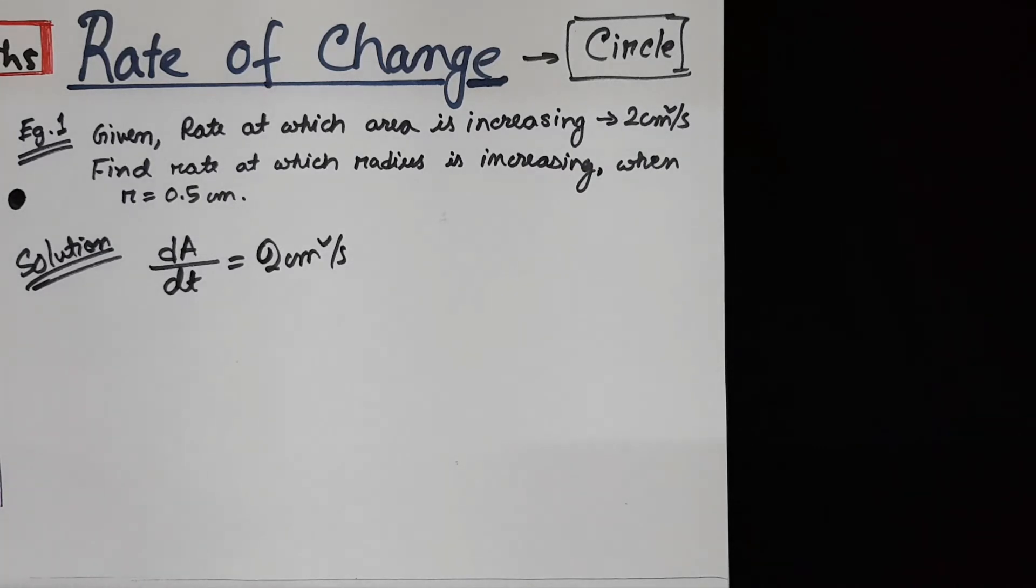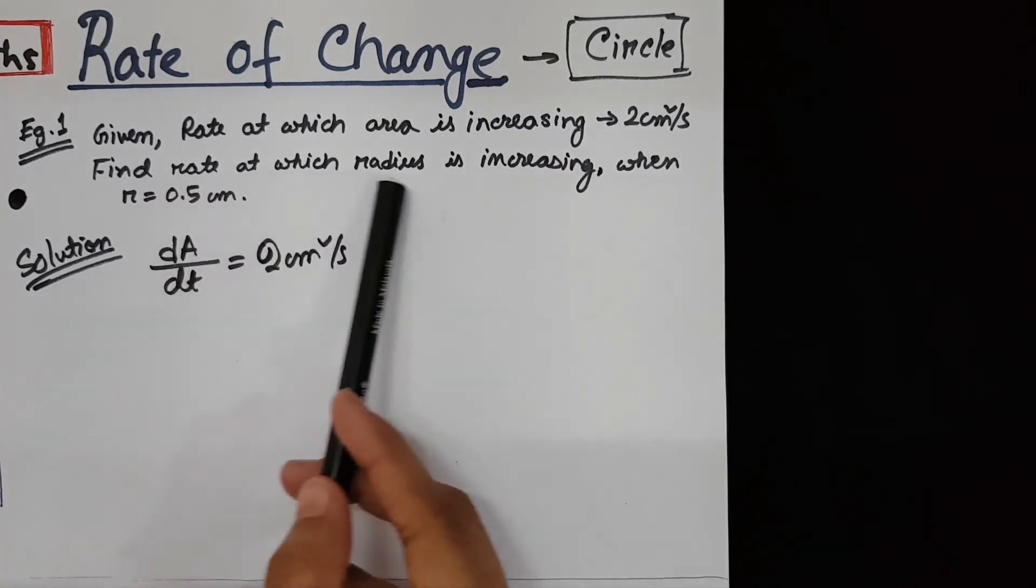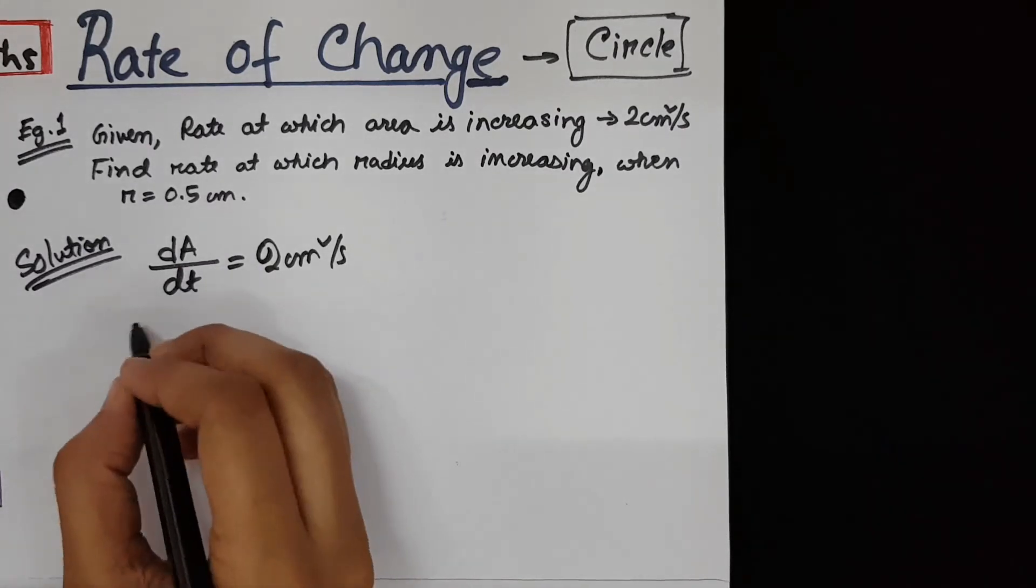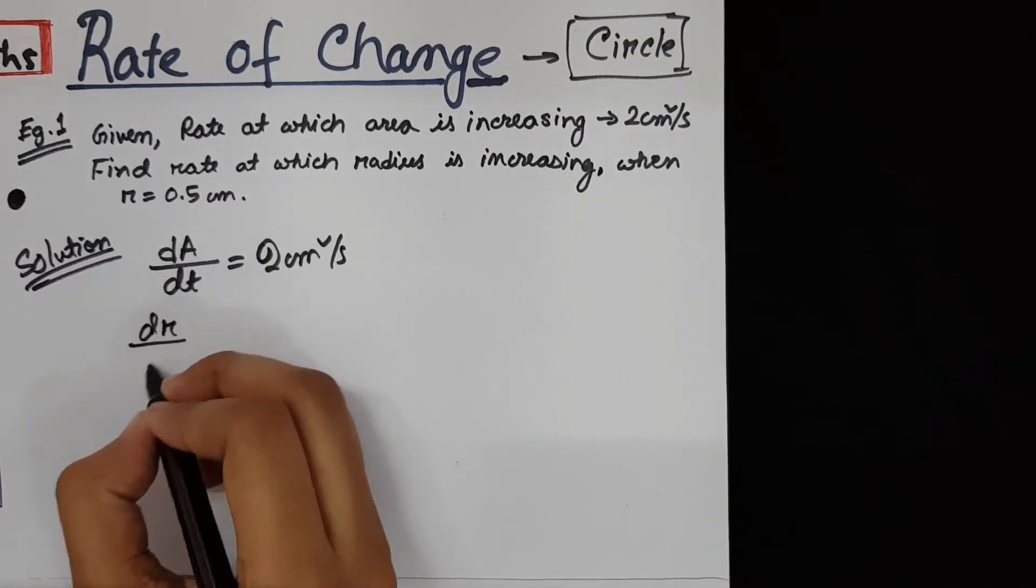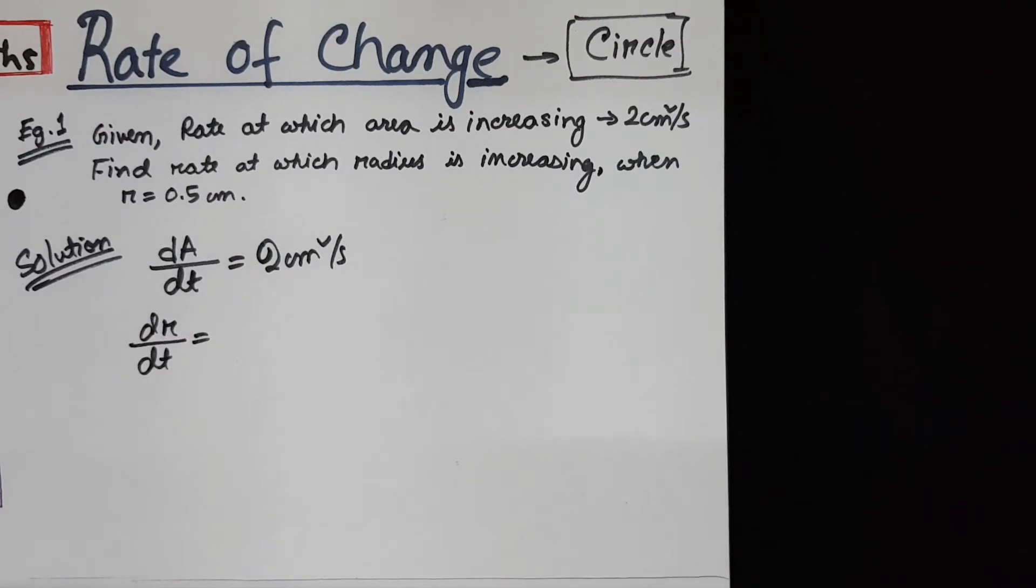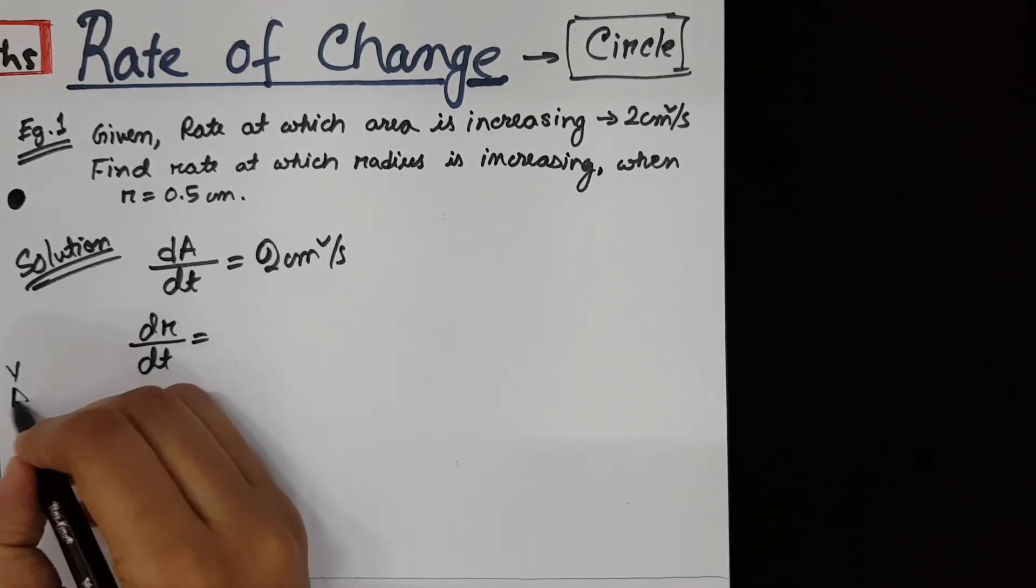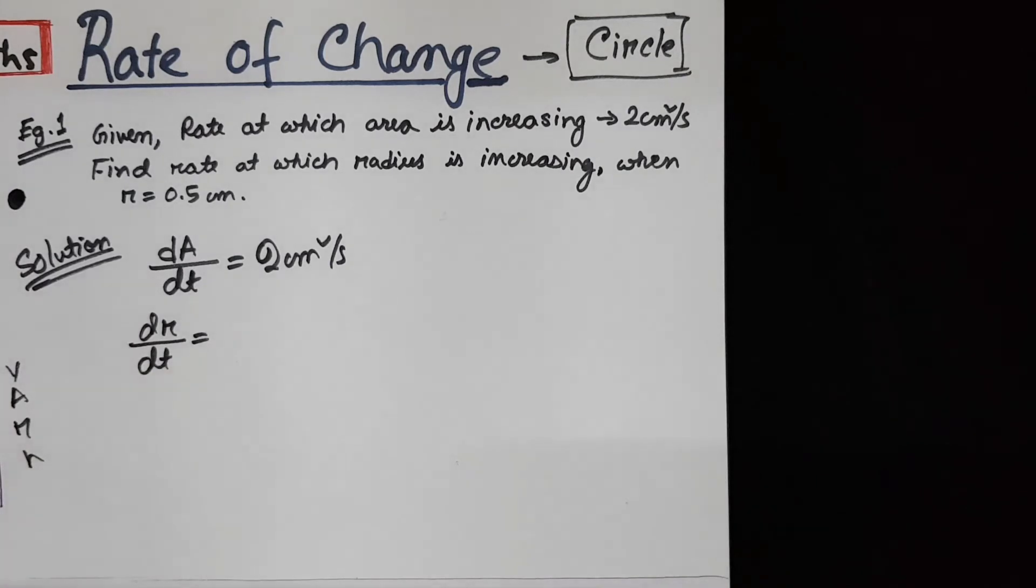So dA/dt is given and we need to find the rate at which radius is increasing. That is, we need the value of dr/dt. So a lot of people just memorize formulas for finding all this thing. But it's difficult because there are a lot of parameters. Volume, area, radius, height.